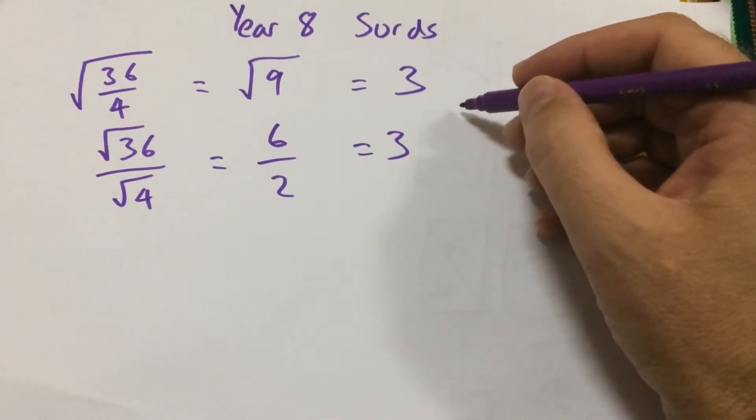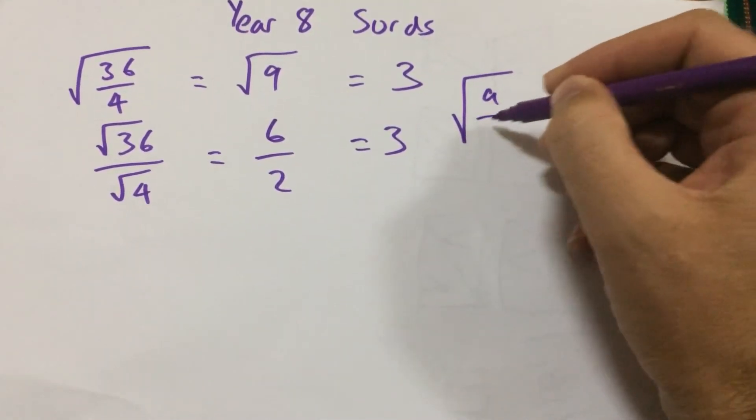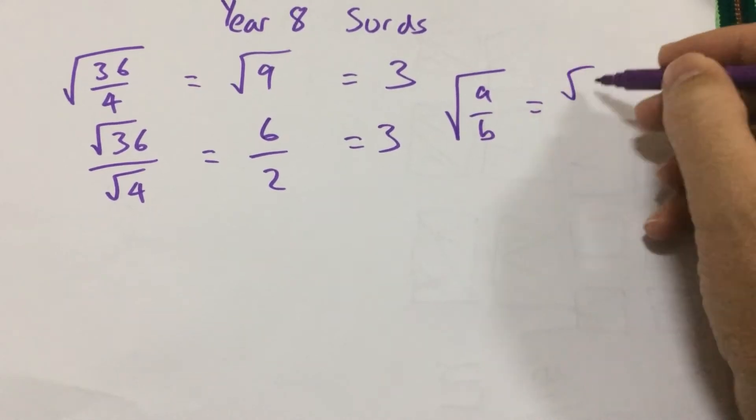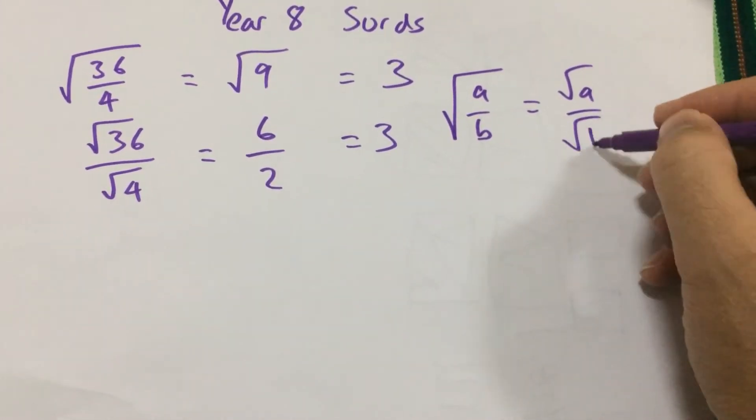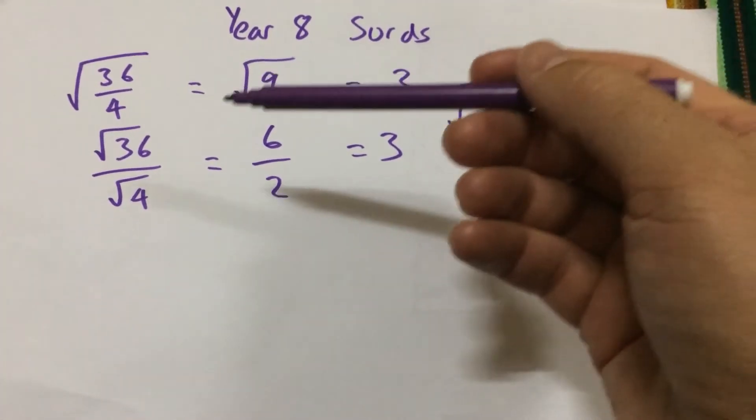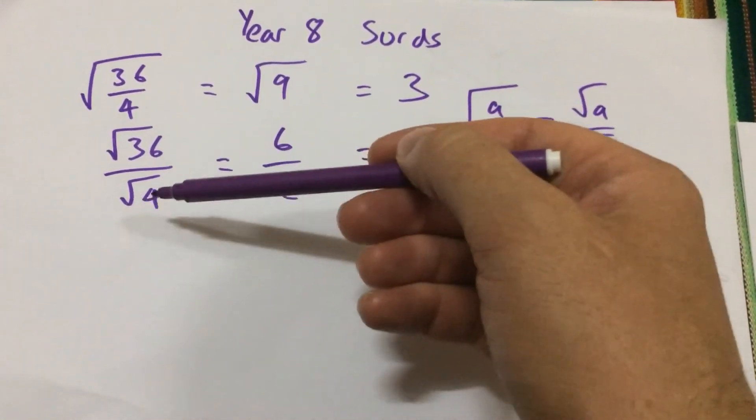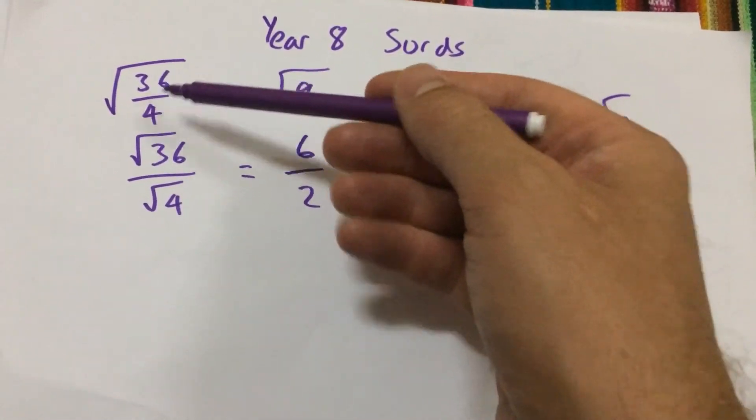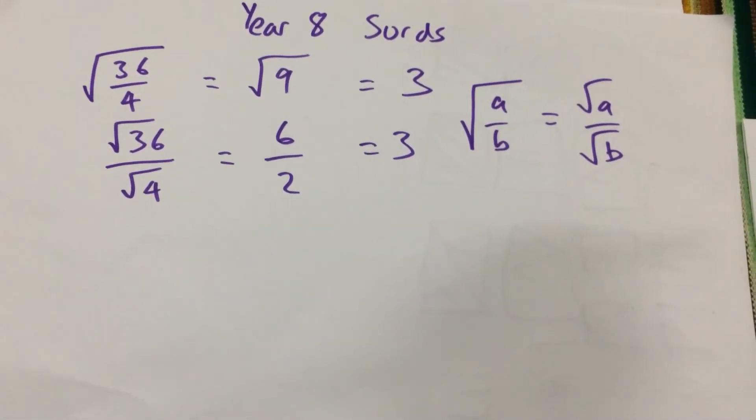So we can generalize that to say that the square root of a over b is root a over root b. So if we're given a question like that, we can divide the two numbers under the square root sign first.